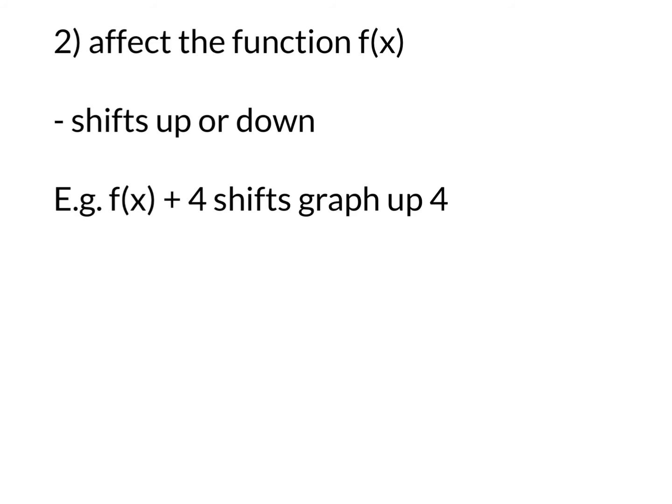The second translation type is affecting the function itself. This one shifts it up or down. So if we have the original function — x cubed, 1 over x, or 2 to the x — and we add a number or subtract a number, we shift it up or down. For example, if we added 4 to a function, the graph shifts up 4.